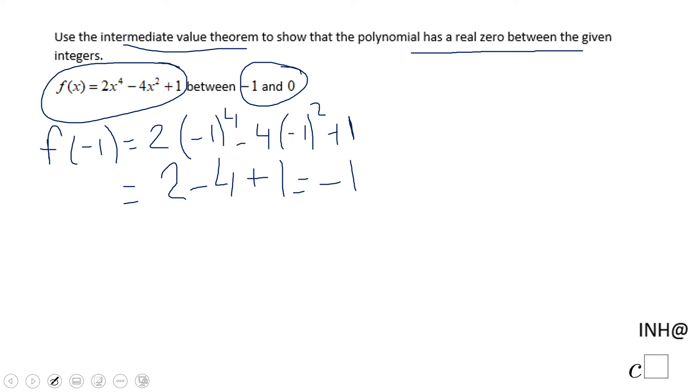We're going to do similar for 0. f(0) is a lot easier, right? Because you have 2 times 0 to the fourth power minus 4 times 0 to the second power plus 1. f(0) will be nothing else than 1. It's a positive value.